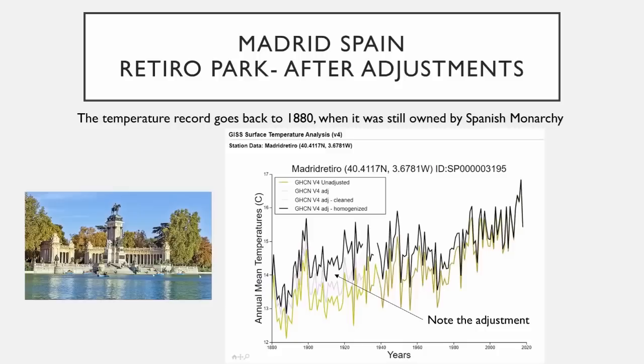Here's Madrid — Retiro Park, which has been around for a long time. You can see they've done an adjustment and changed the temperature data in the past, while the present temperature data on the far right has no adjustments. Again, this changes the slope of the temperature increase over time, making it appear that things are warming faster.